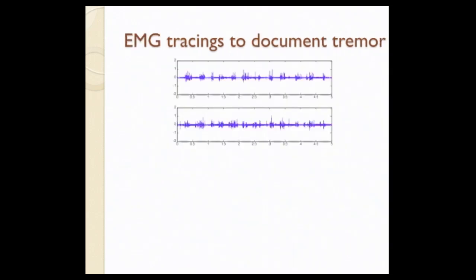A couple of times a year we record tremor with EMG, along with an accelerometer to record limb movement. There is really only one major indication to do this kind of study, and that's to look at orthostatic tremor — a particularly interesting type of tremor. It's another way to document tremor or show patients what their tremor looks like on a screen.